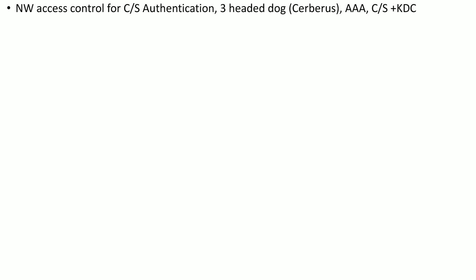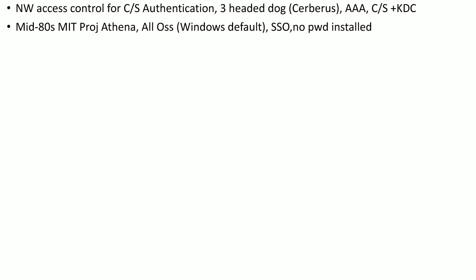The three heads of the dog are represented by the triple-A services offered by the Kerberos protocol: authentication, authorization, and accounting. Some references say the three heads represent the client, server, and Key Distribution Center (KDC). Kerberos was formulated in the mid-80s as part of MIT's Project Athena.